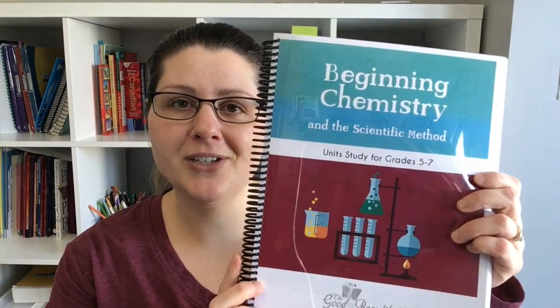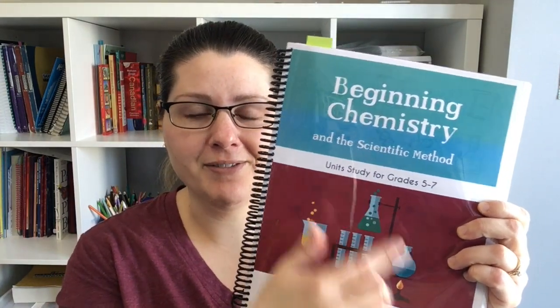Hey guys, Kristina here and today I have a review of the Good and the Beautiful unit study, Beginning Chemistry and the Scientific Method. This is geared towards grades 5 through 7. I did it with my children. We have a toddler as well as children in grades 1, 4, 5 and 7. My child in grade 1 was there for most of it but didn't necessarily take part in everything and I'll go into that a little bit deeper in a minute.